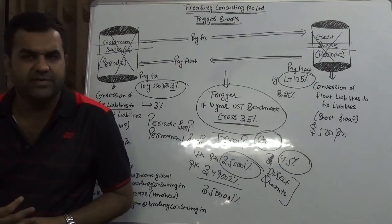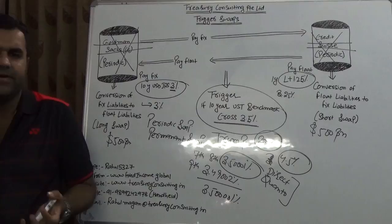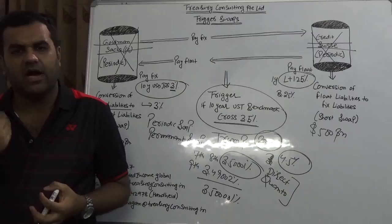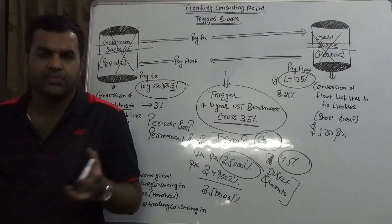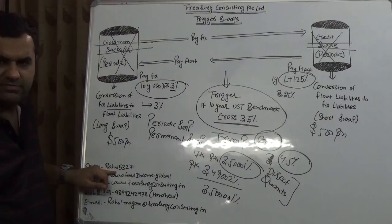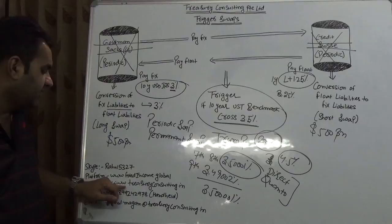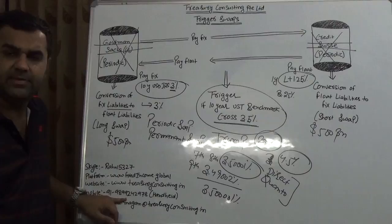Of course, to wind up the video, the call banks are taking doesn't mean the call has to be correct. It's a matter of time. It's very simple - if today Euro is 1.19, you're selling, I'm buying. At the end, one would win. Who would win? Nobody knows. Market will tell. This is how trigger swap moves. In case you have any doubt, you're most welcome to visit our Skype, which is Rahul5327. My platform is www.FixedIncome.global. The website is www.TreasuryConsulting.in. Mobile is 9899242978. Email is rahul.magan at TreasuryConsulting.in.